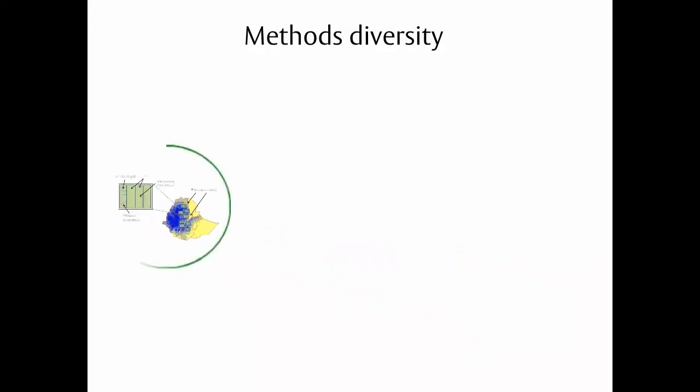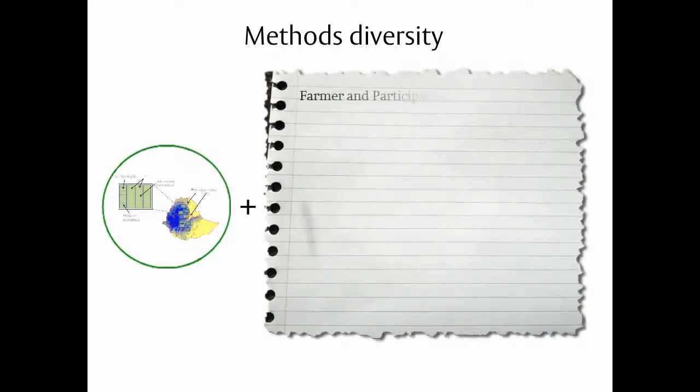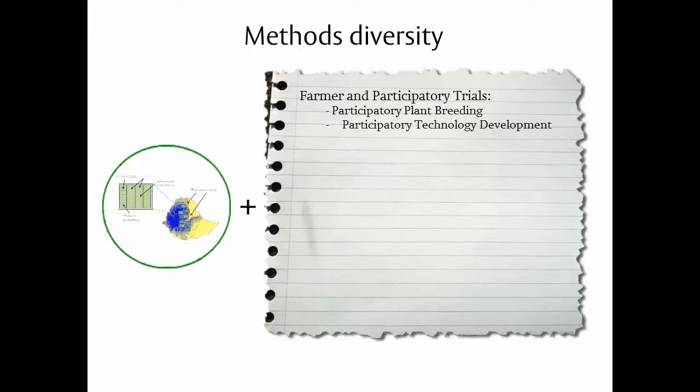But they also include a range of other options and interventions, including farmers' trials, such as those described in participatory plant breeding and participatory technology development schemes. We have randomized controlled trials of other sorts of interventions. These days, we can do experiments, sometimes in computers, using simulation models.